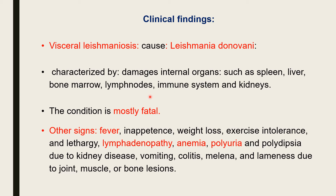There is lymphadenopathy — lymph node enlargement — and involvement of the immune system and kidneys. In the kidney it causes glomerulonephritis, and that is the main cause of death. While cutaneous leishmaniosis may linger for a long time, visceral leishmaniosis is mostly fatal because most systems of the body are involved. Other signs include fever, inappetence, loss of body weight, and exercise intolerance. If slight exercise is given, the animal becomes panting or depressed because of the effect on the heart and lungs.